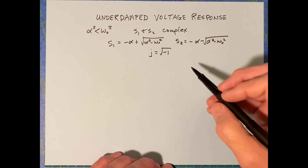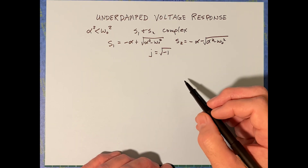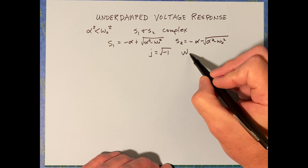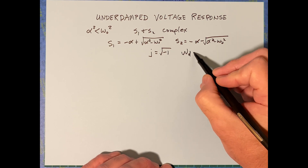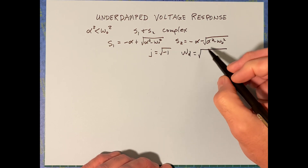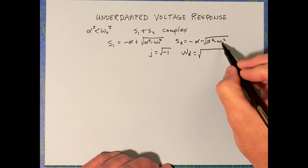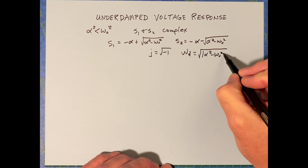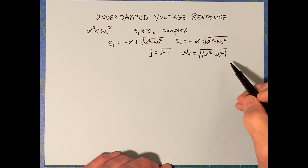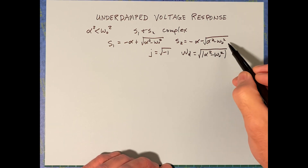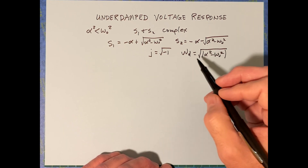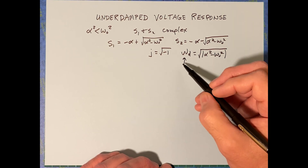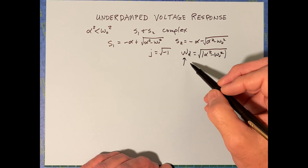I'm going to make a substitution here. I'm going to call omega sub D equal to the square root of the stuff that's underneath the radical, but we take the absolute value of it so that it's positive. This is called the damped radian frequency.